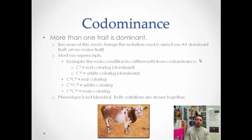Co-dominance is another example that doesn't follow the rules. In this situation, you have more than one trait that's dominant. Since we can't really write more than one capital A, we have to change our notation and use superscripts. Roan cattle is a very famous example of co-dominance. Capital C superscript R represents a reddish maroon coloring, and capital C superscript W represents white coloring. Both of these are dominant traits.